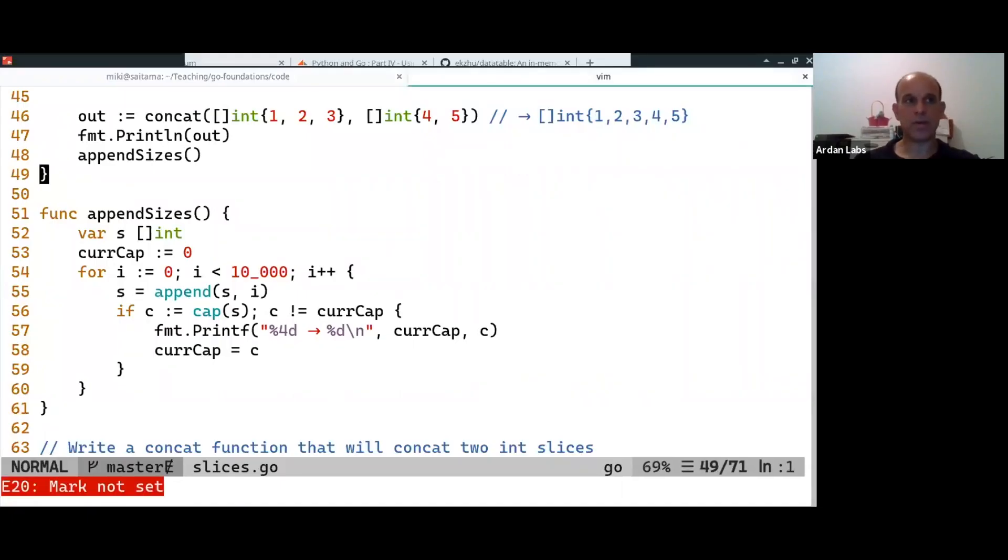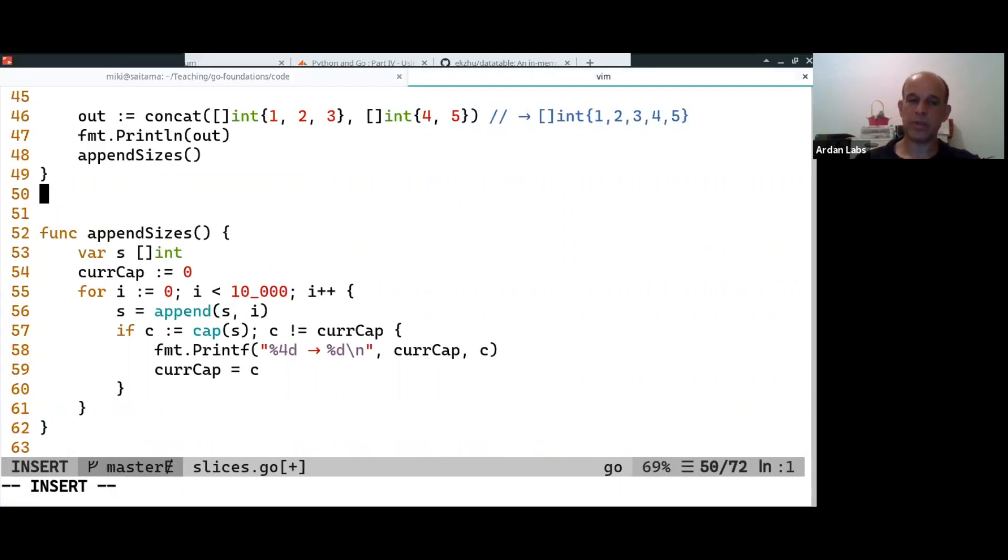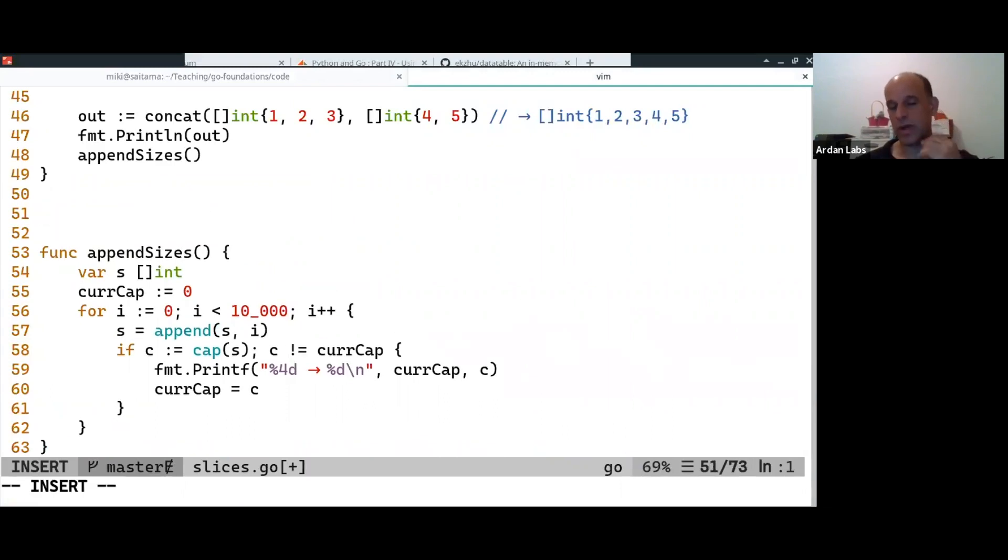If you want to write our own append, we can probably do something. We cannot do a generic append like the Go one, because the Go one append will work on int slices and string slices and float slices, and any slice that you'll define, it's going to work, and you cannot write a function like that.